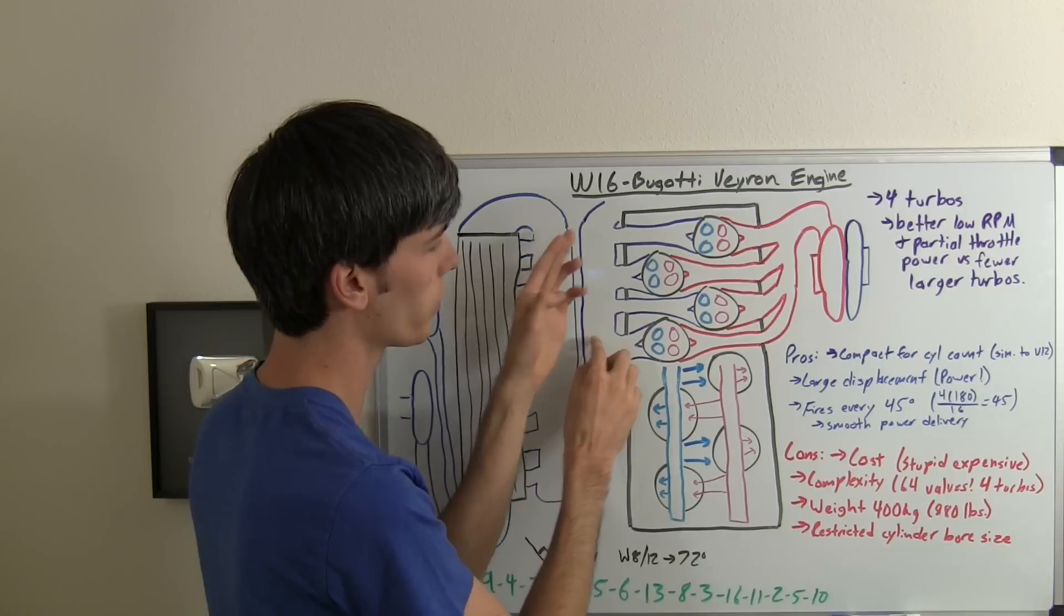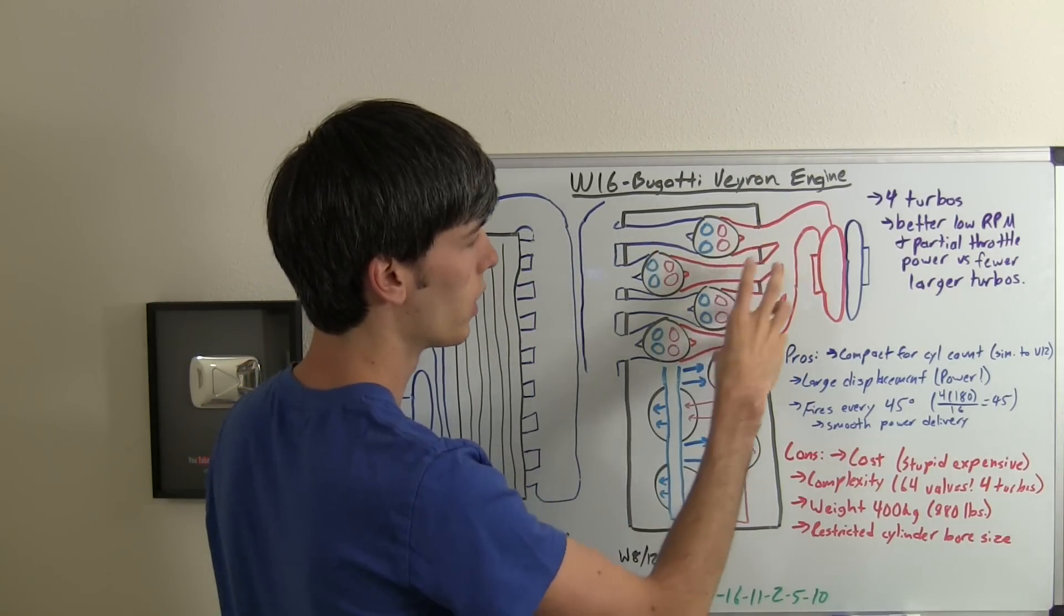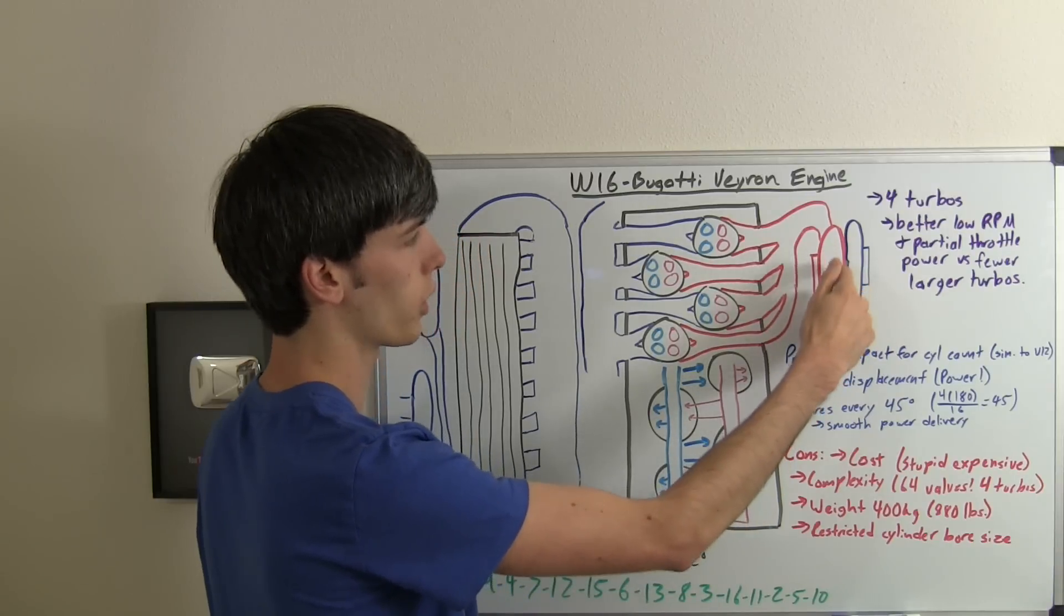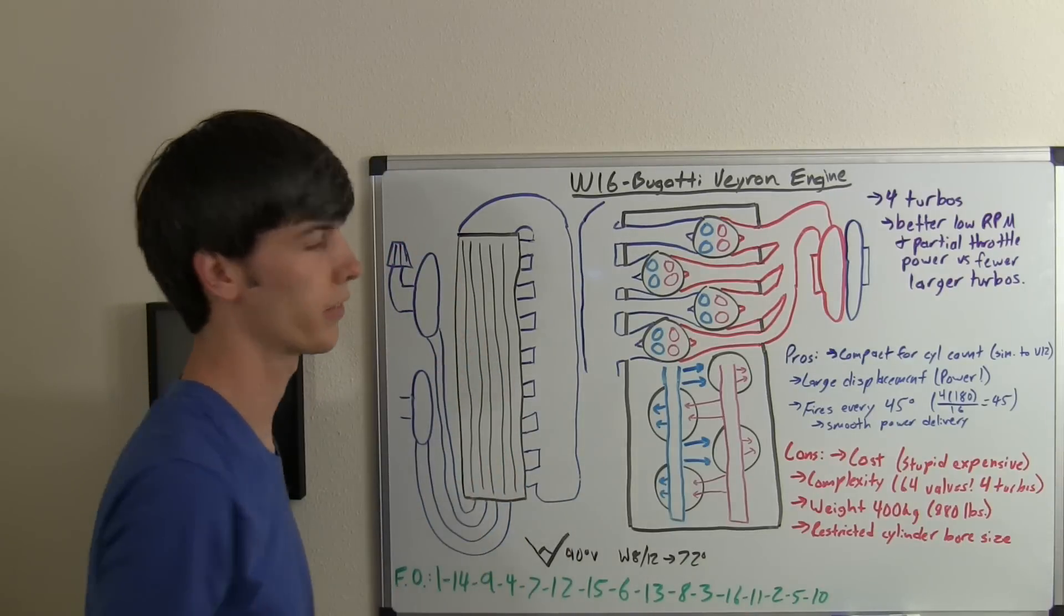So here we have for these four cylinders, the air coming in, and then it leaves through this one exhaust manifold, which is just for these four cylinders, and then it goes into this individual turbocharger, spools this up, pulls in air, and you have the process repeat.